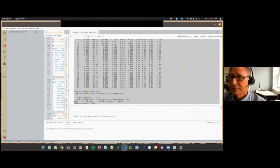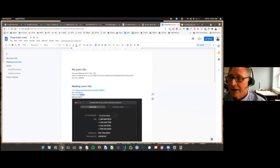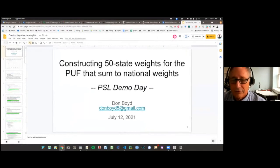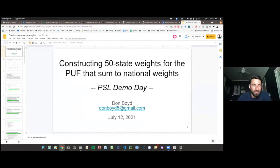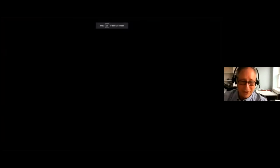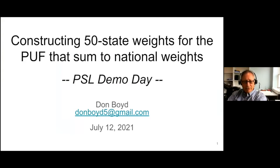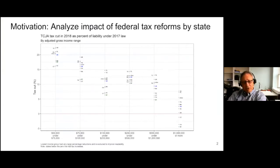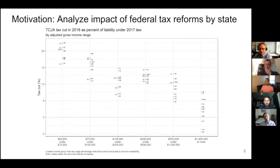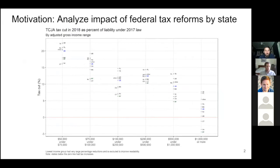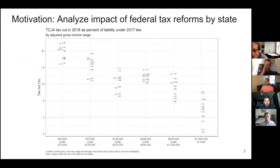Thanks very much. I'm going to start by trying to share my screen. The title says it: Constructing 50 State Weights for the PUF — the public use file — that sum to national weights. The primary motivation is to be able to analyze the impact of federal tax reforms by state. This is a graph from some earlier work that Matt Jensen and I did late last year, which gives you a flavor of the kinds of things you might want to do.